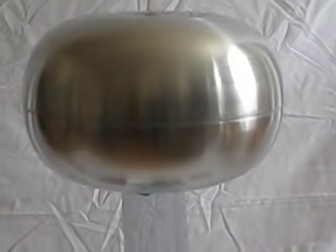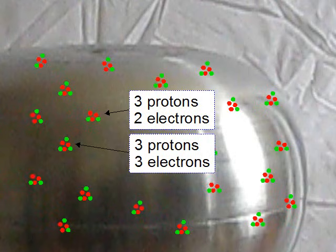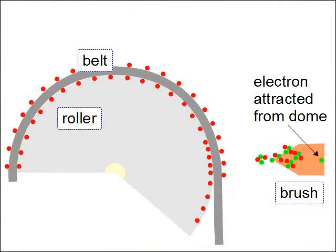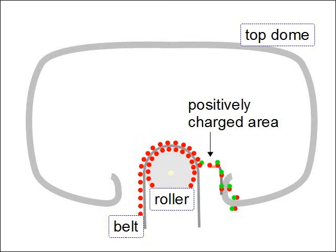The final step is the charging of the outer surface of the top dome due to the Faraday ice-pail effect. In this Van de Graaff generator, that charge will be a positive charge — the outer surface of the dome will have more protons than electrons. This makes sense, since in step 4 we were moving electrons from the top brush to the belt. So the answer to step 4's question — where did the electrons come from — is the outer surface of the top dome. When an electron is attracted from the top brush to the belt, that leaves a missing electron in that position on the brush, meaning that area of the brush is now positively charged. This positively charged area attracts an electron from further along the brush, now leaving a missing electron further up the brush.